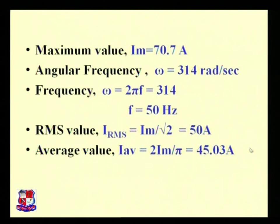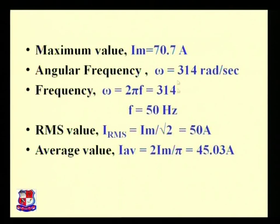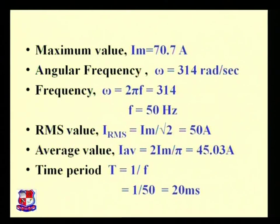RMS value is always 0.7 of maximum value, and average value is 0.63 of maximum value. So: maximum value is 70.7 A, RMS value is 50 A (less than maximum), and average value is 45.3 A (less than RMS). This sequence should always be maintained — it is a short trick to verify your answers are correct.